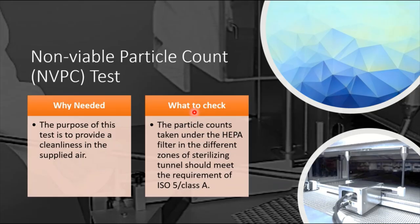Non-viable particle count: the purpose is to prove the cleanliness of the area. What need to check: we need to verify and address that the area fulfills the criteria of ISO 5 or Grade A requirement. Lots of accessories are available. You can do it with long tubing with a cup, and this automation is talking about how we can verify NVPC.